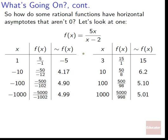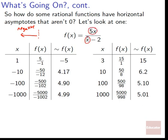How do we get rational functions with a horizontal asymptote that isn't at 0? Let's look at f of x equals 5x over x minus 2 — the one with a horizontal asymptote at 5. If we plug in positive 1, we get 5 over negative 1, which is negative 5. At negative 10, we get approximately 4.17. At negative 100, approximately 4.90. At negative 1,000, approximately 4.99. The 5x on top and the x on the bottom grow at the same rate, other than a multiplicative factor of 5 — the top grows precisely 5 times faster than the bottom.